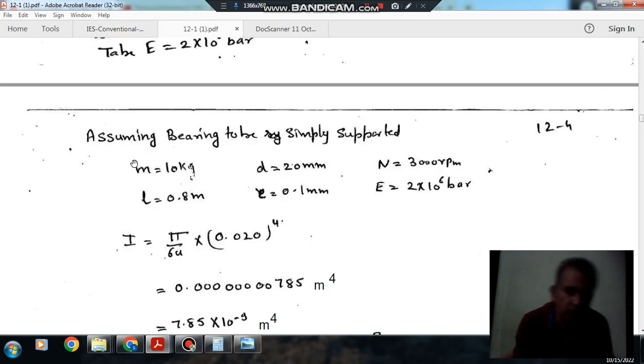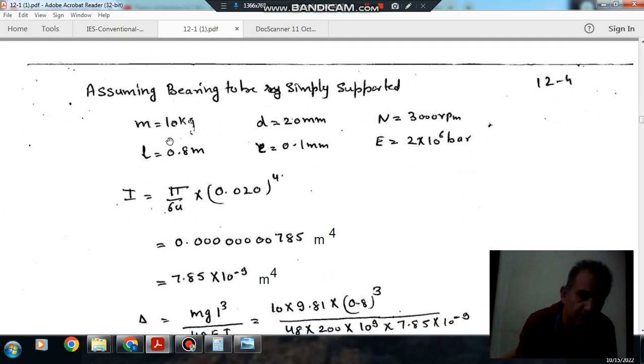We will assume that the bearing is simply supported. Mass of the rotor is 10 kg, diameter of shaft is 20 mm, and rpm of shaft is 3000 rpm. The length between bearings is 0.8 m. The eccentricity between center of disk and shaft is 0.1 mm.